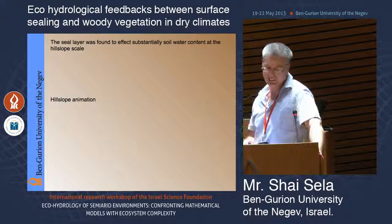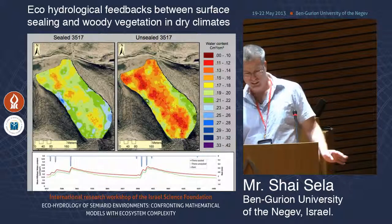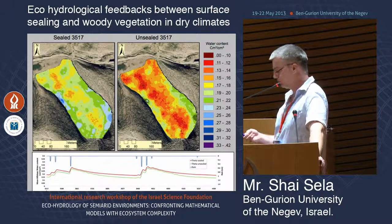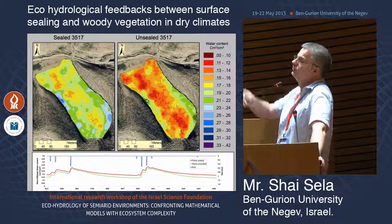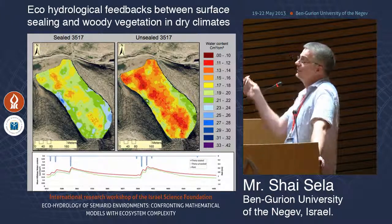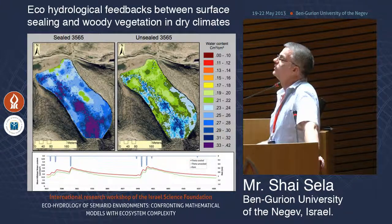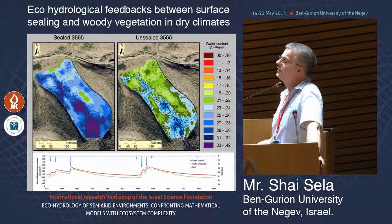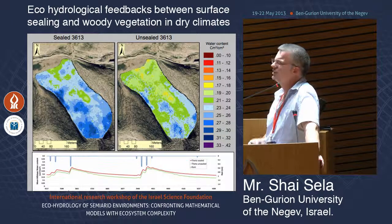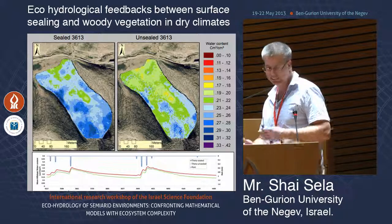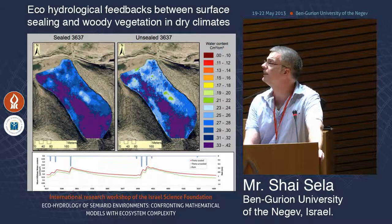Now that we know the seal layer substantially affects soil water content at the hill slope scale, here is an animation. On the left is the hill slope accounting for sealing — a seal layer on each of 8,000 independent soil columns. On the right is the same hill slope without the seal layer. The legend shows water content: red is dry, blue is wetter. This is an extract from the 2006-2007 season, showing a few storms to convey the dynamics of water content on the hill slope.